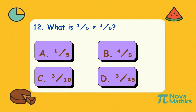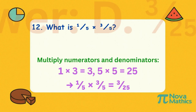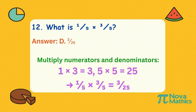One-third. Twelve. What is one-fifth times three-fifths? Multiply the top numbers: one times three is three. Multiply the bottom numbers: five times five is twenty-five.